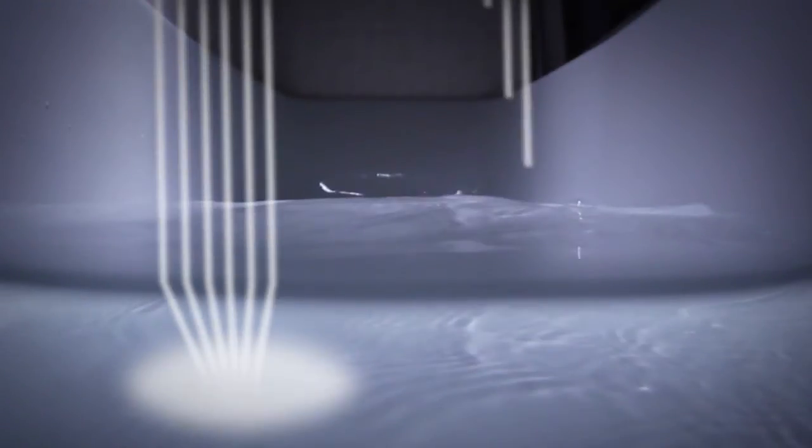The surface of the water is undulating. Those undulations cause the rays of light to diverge and converge. When they converge, that makes a bright spot. Where they diverge, you get a dark spot.